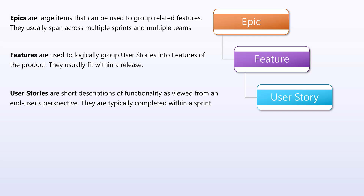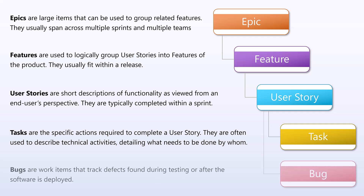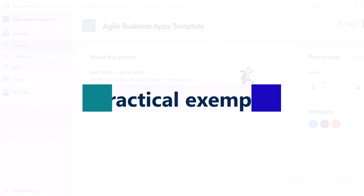Epics are large items that can be used to group related features. They usually span across multiple sprints and multiple teams. Tasks are the specific actions required to complete a user story. They are often used to describe technical activities, detailing what needs to be done and by whom. Bugs are work items that track defects found during testing or after the software is deployed.